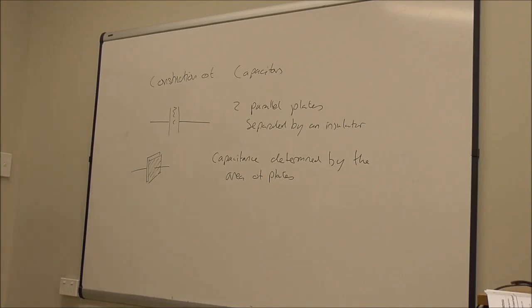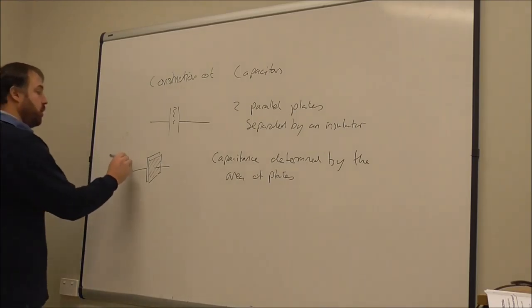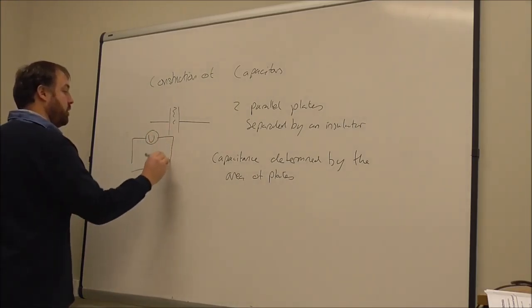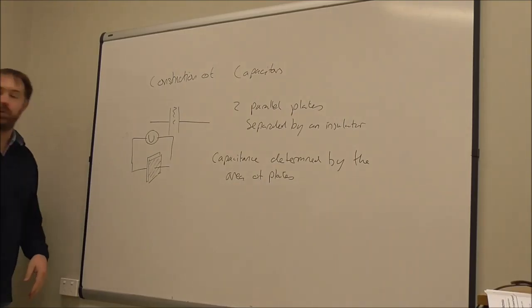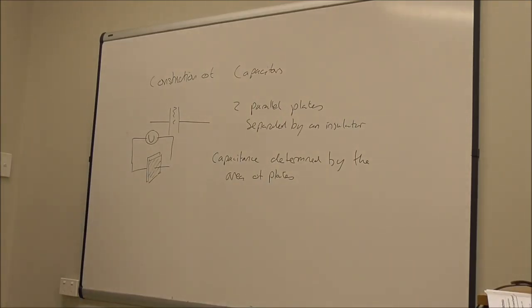Now, you can always tell whether there's a charge across, or a capacitor is charged, because it'll have a voltage across that. So, if I were to put my voltmeter across the capacitor, I would see that the more I charge it up, the higher the voltage across it.